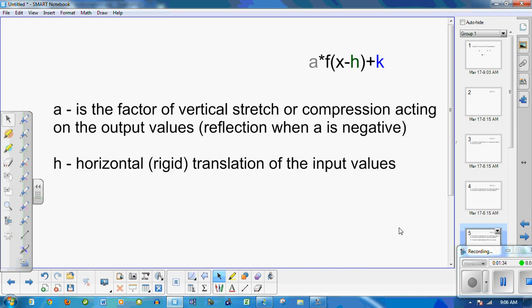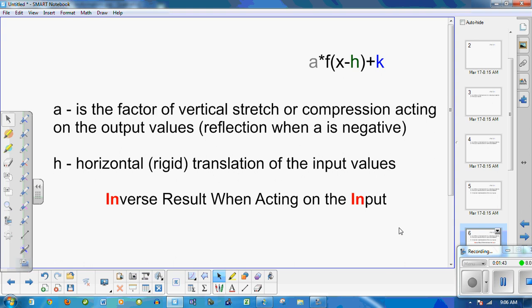h is the horizontal rigid translation of the input values. And it's really important. You should have seen this in investigations in class that you get the inverse result when acting on the input. For instance, if you're looking at f at x plus 3, it's actually going to go left 3 units. And if you had a translation such as f at x minus 7, it's going to go right 7.